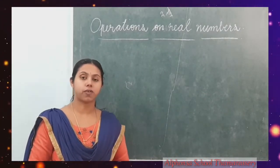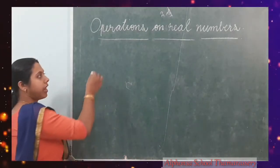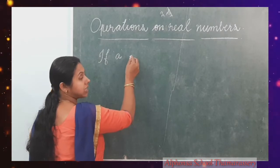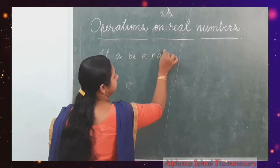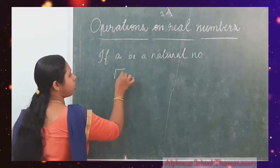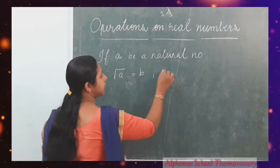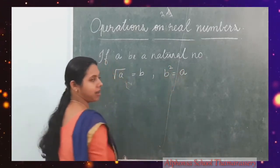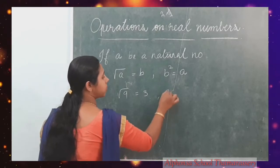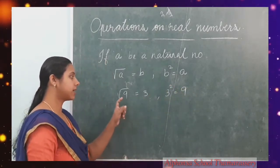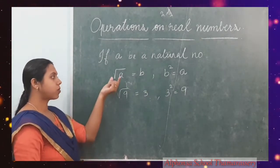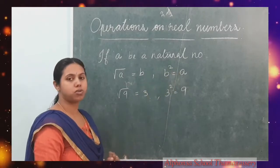Now we can discuss the operation of taking the square root of real numbers. If A be a natural number, then square root of A is equal to B, which means B square is equal to A. For example, root 9 is equal to 3 because 3 square is equal to 9. Therefore, the square root of 9 is equal to 3. That means if root A equals B, then B square equals A.